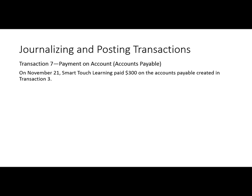Remember, on account means to be paid later. So in this case, we, Smart Touch Learning, are paying for a transaction that we got earlier and didn't pay for at the time. Remember we had office supplies we purchased in Transaction 3, and we had an account payable that we created. Accounts payable is an account especially for that purpose — it's an account we have for when we buy something and we're going to pay for it later.